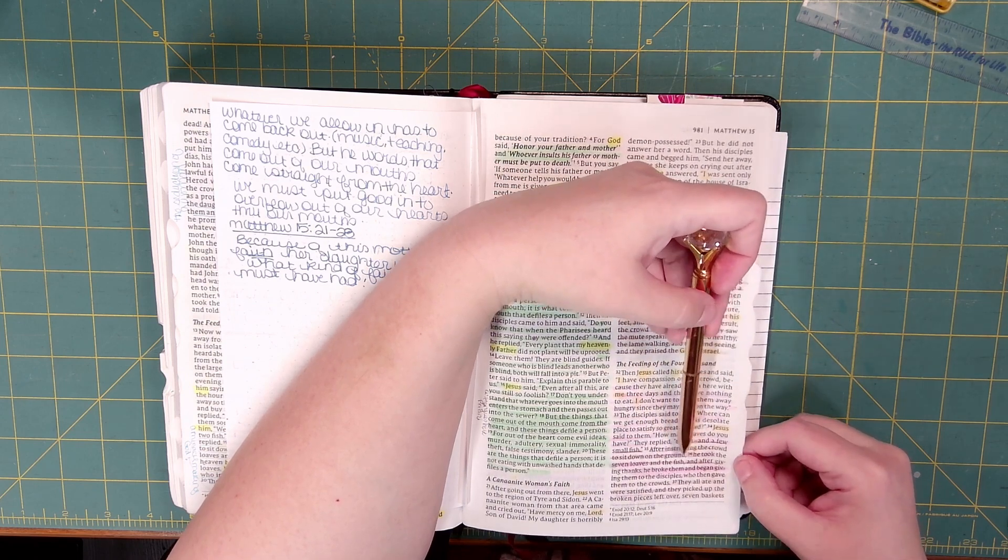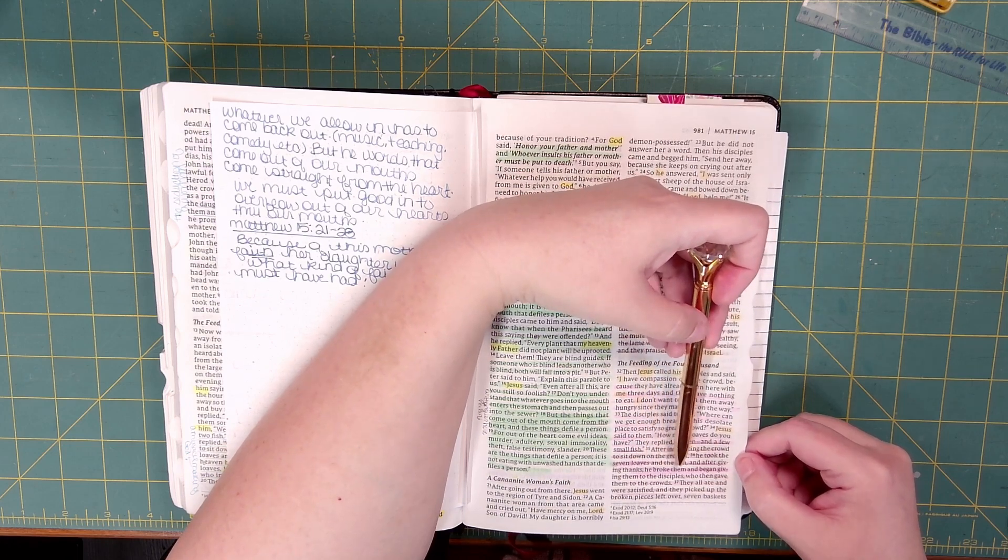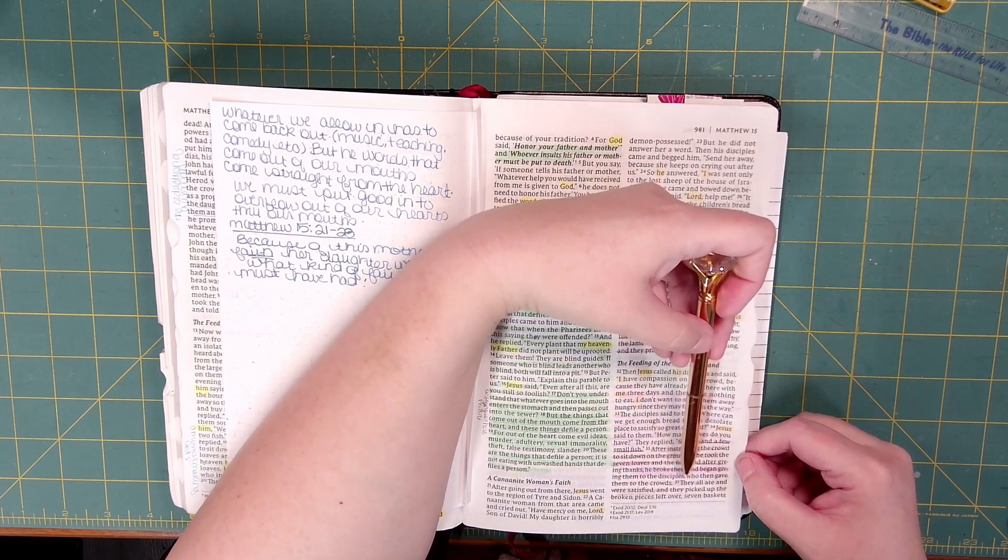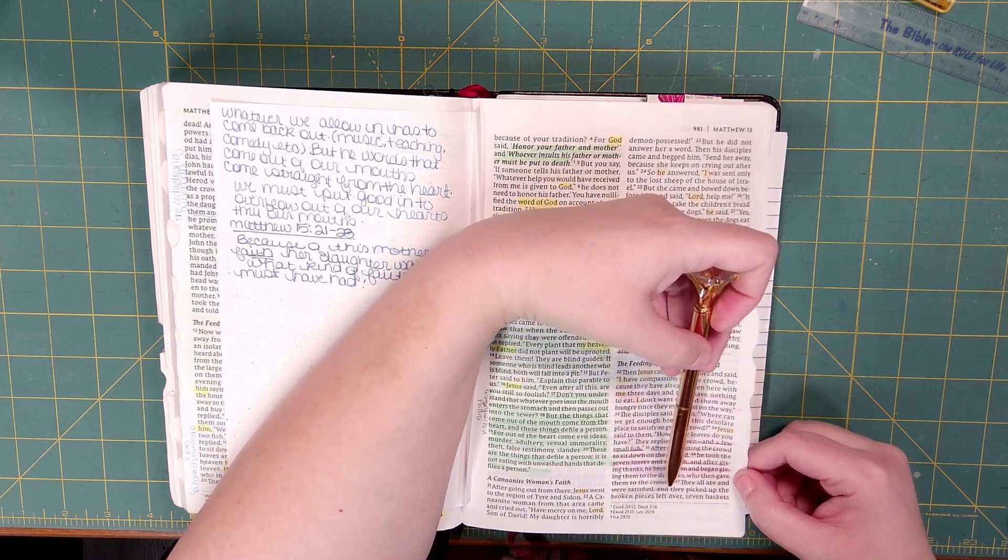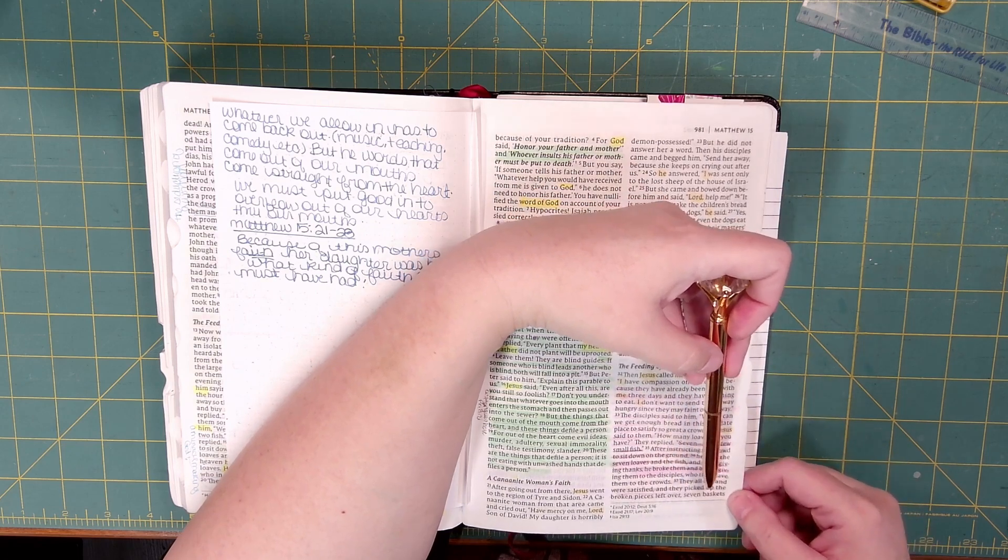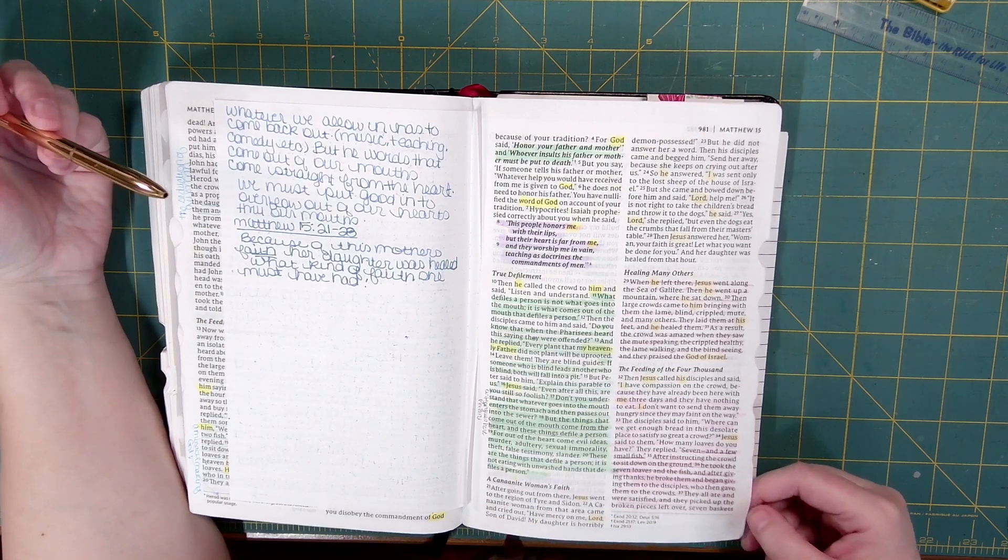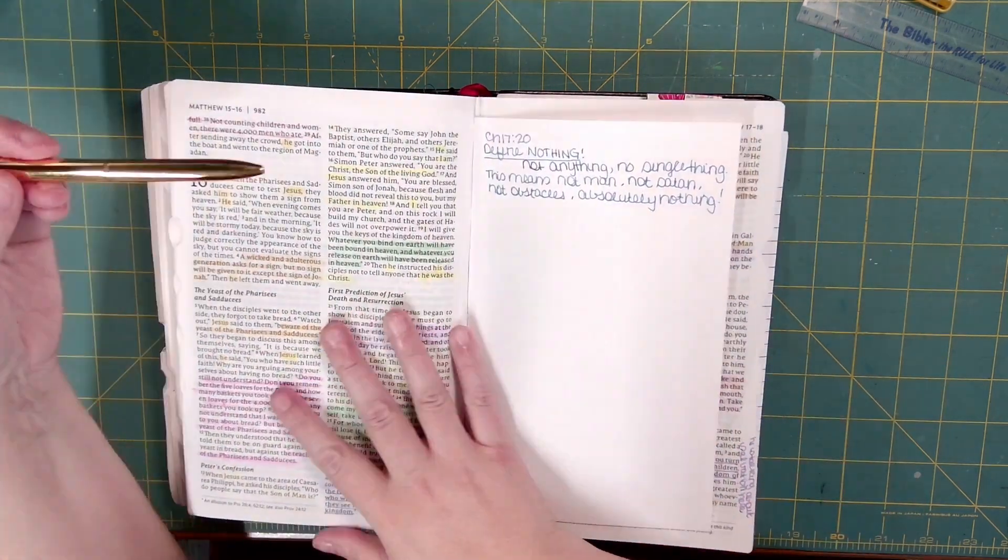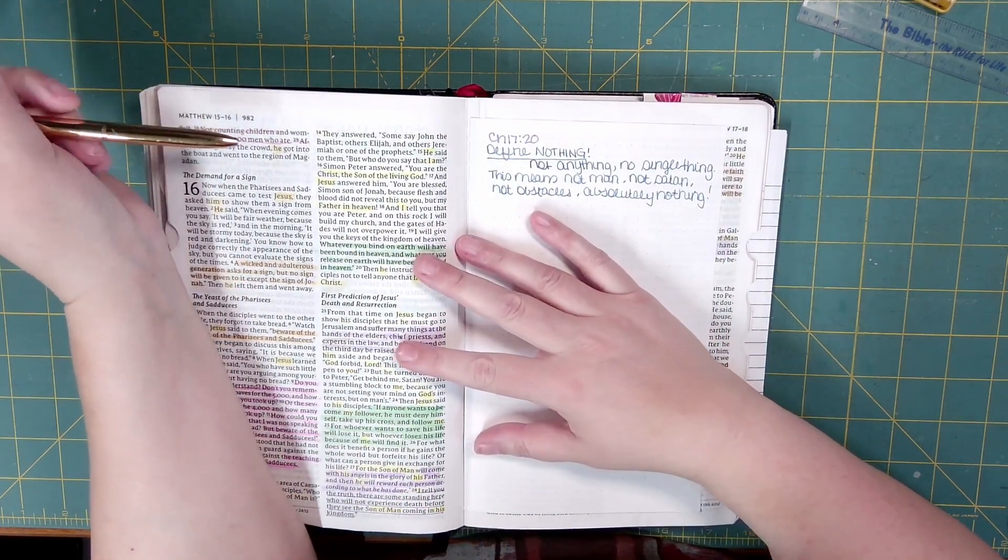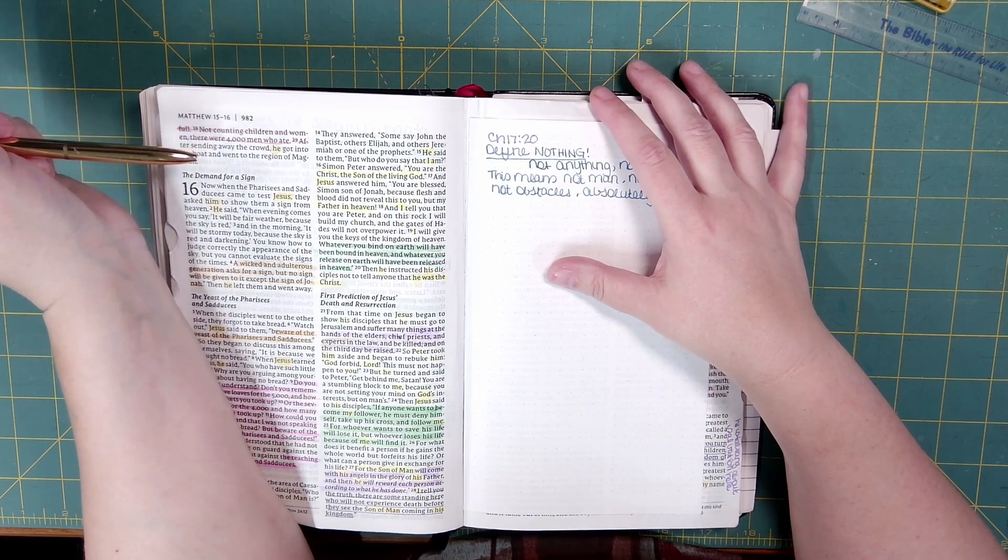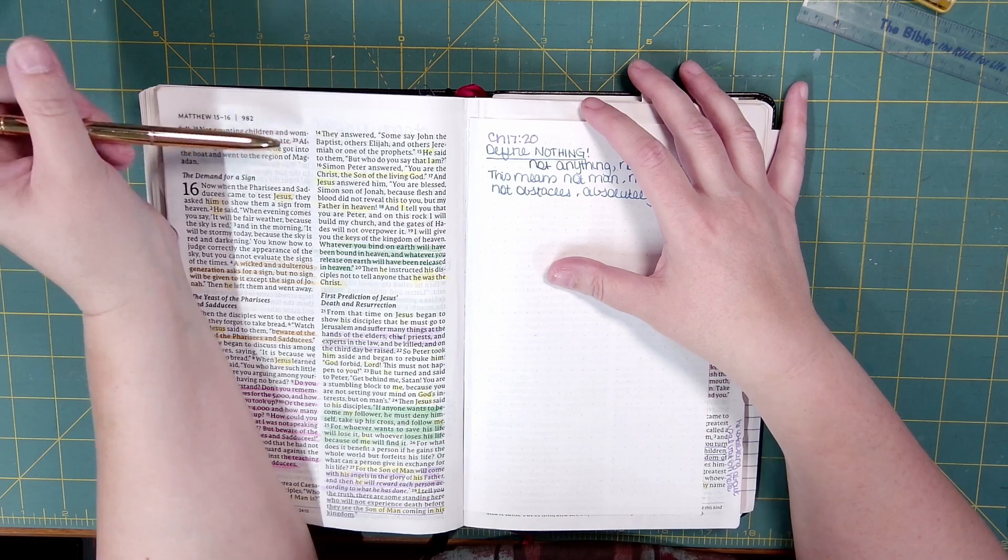After instructing the crowd to sit down on the ground, he took the seven loaves and the fish, and after giving thanks, he broke them and began giving them to the disciples, who then gave them to the crowds. They all ate and were satisfied, and they picked up the broken pieces left over, seven baskets full. Not counting children and women, there were four thousand men who ate. After sending away the crowd, he got into the boat and went to the region of Magadan.